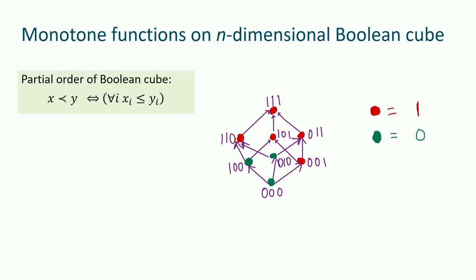Let's start. Since this is about monotone functions on the Boolean cube, let's remember what the Boolean cube is. Every vertex of the n-dimensional Boolean cube can be written as a 0-1 string, and there's a natural partial order on the Boolean cube. We say x is less than y if for all i, x_i is less than y_i. Many strings are not related — for example, 1,1,0 and 0,1,1 have no ordering between them.